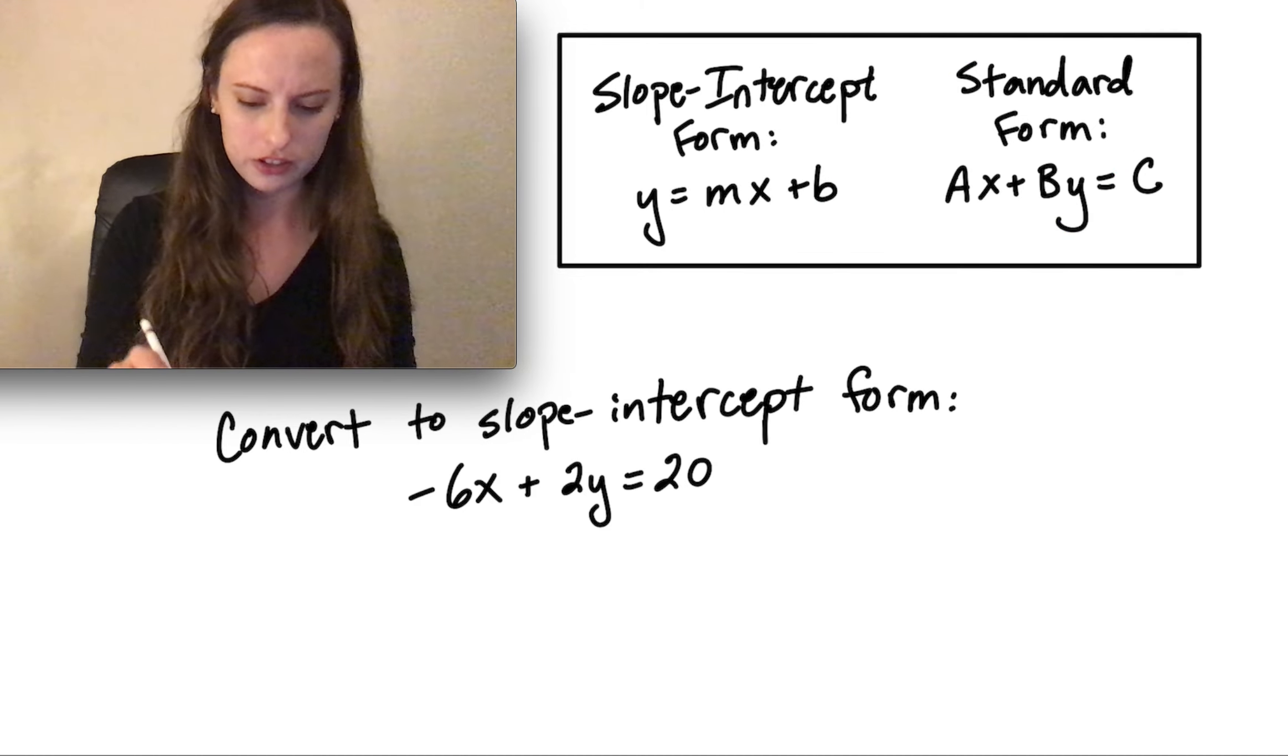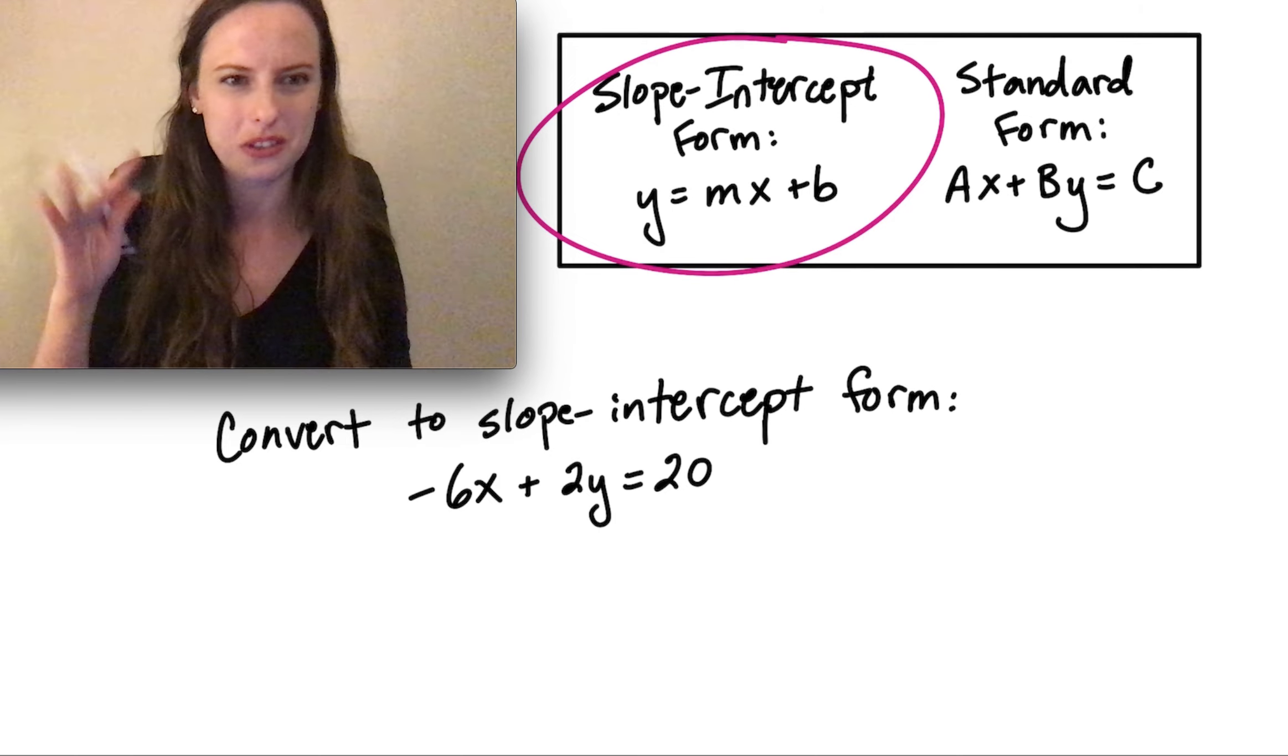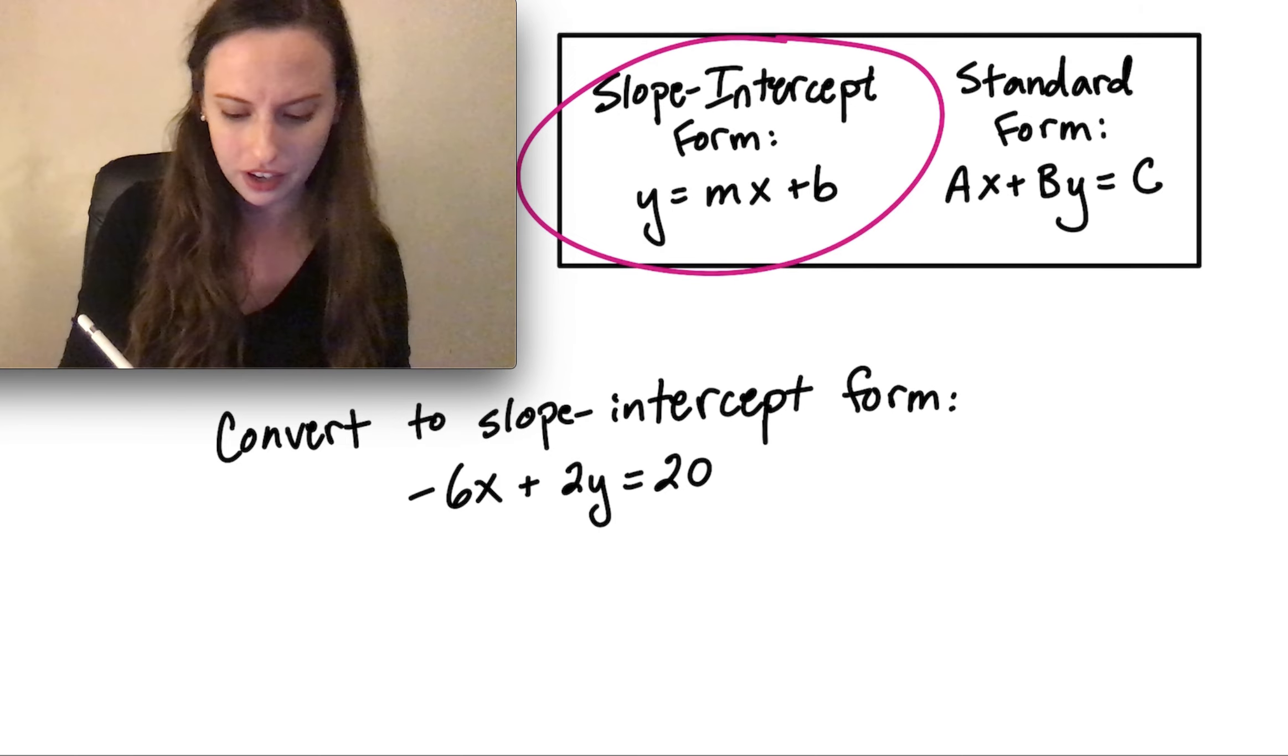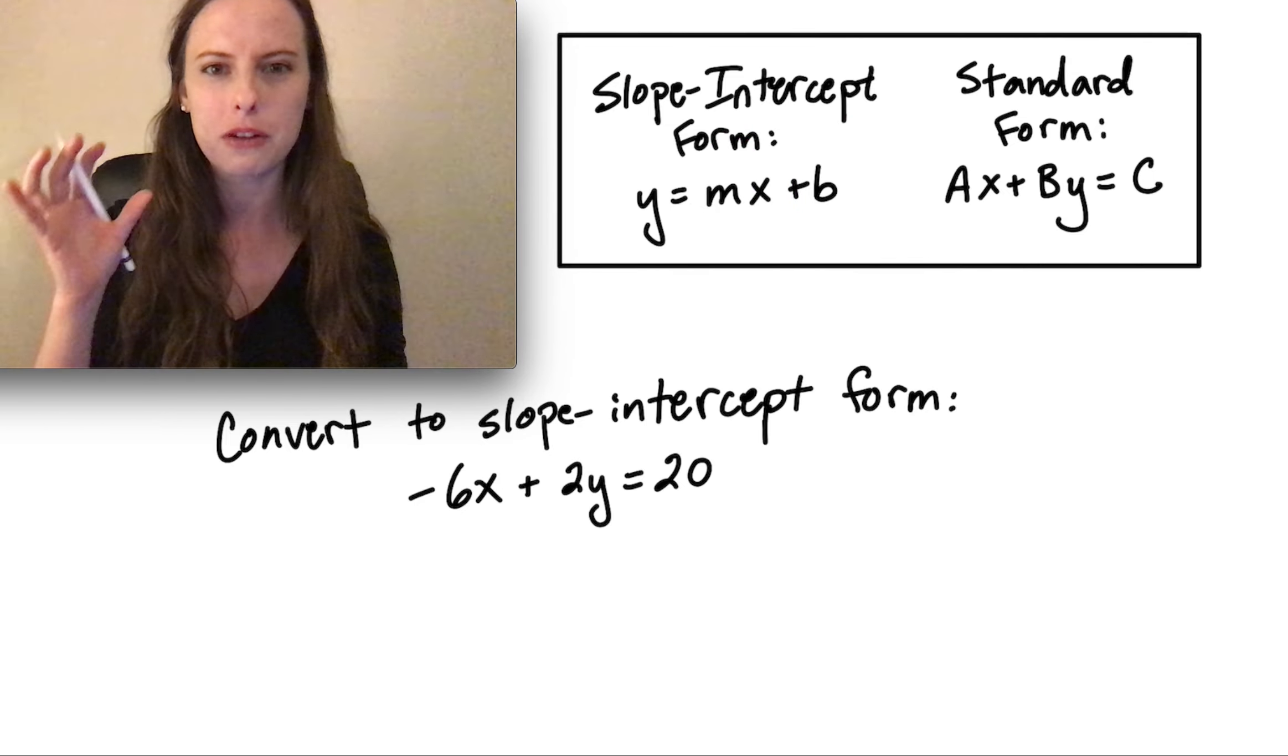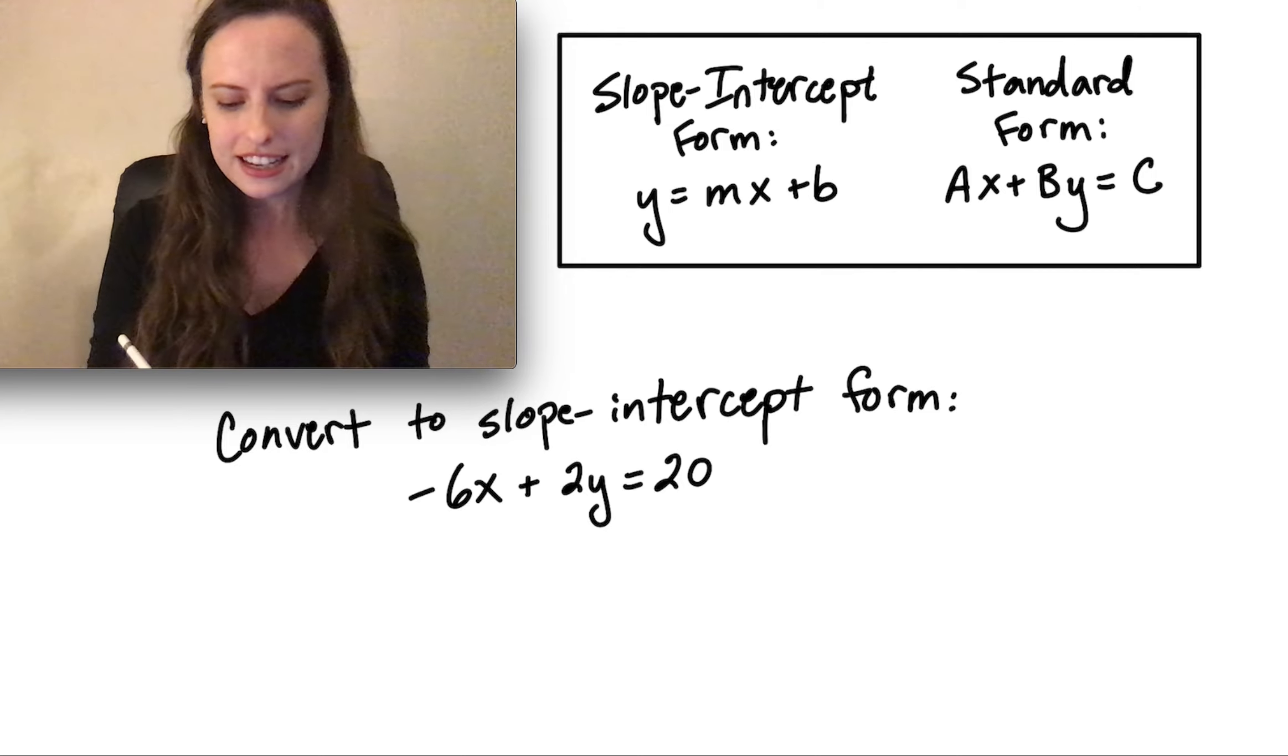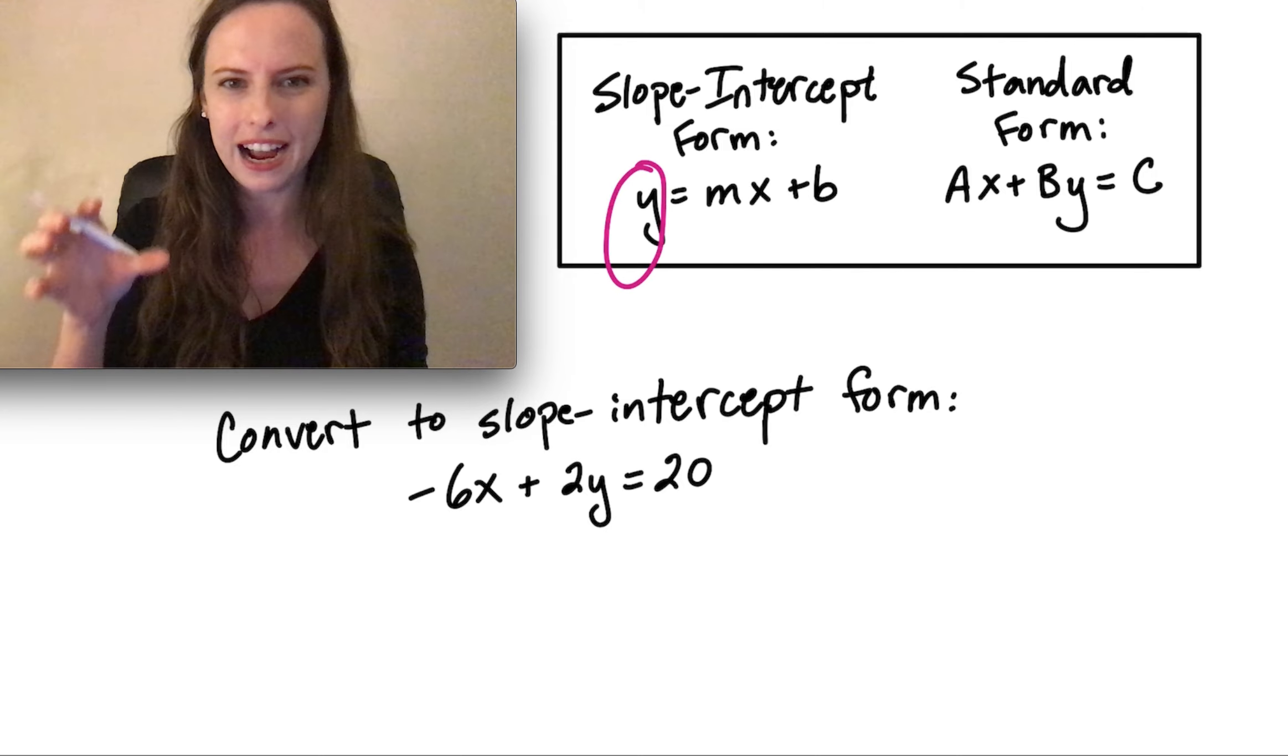In contrast, we have slope-intercept form, which has those two numbers: the slope, which is m, and the y-intercept, which is b. The main thing about slope-intercept form is that you've got y by itself.